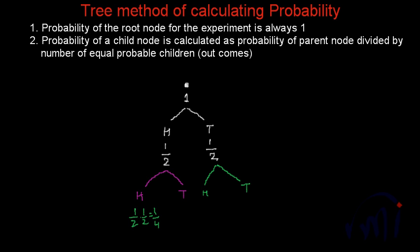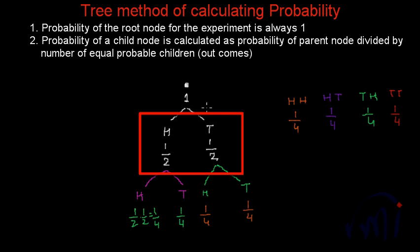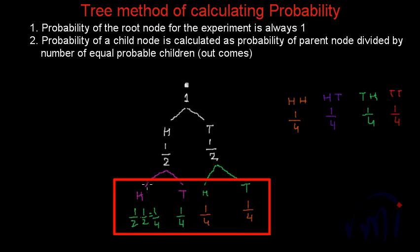Similarly the probability of getting a tail in the second toss when you got head in the first toss is also 1 by 4. The probability of getting a head when you already got tails in the first toss is also 1 by 4, and the same for tail — also 1 by 4. If you notice, at any level the sum of the probabilities of all possible outcomes is always 1. At this level it is 1 by 2 plus 1 by 2 which is 1, and at the next level also the total probability of all possible outcomes is 1.